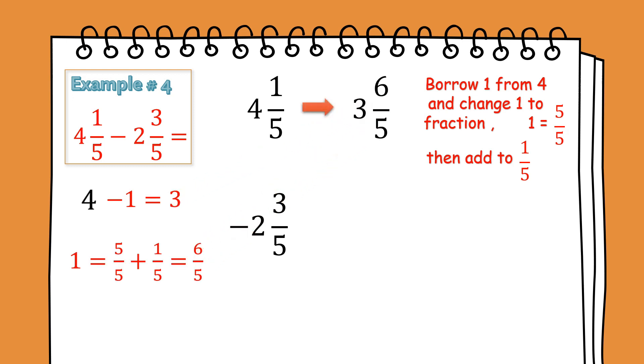Borrow 1 from 4 and change to 5/5, then add to 1/5, so that we can get 3 and 6/5. Subtract the whole numbers, then subtract the fractions. The answer will be 1 and 3/5.